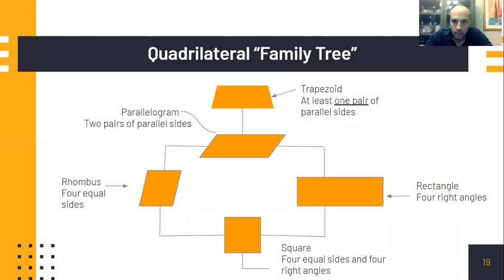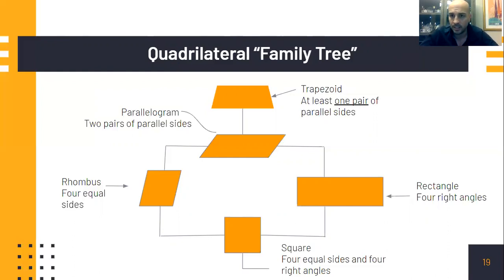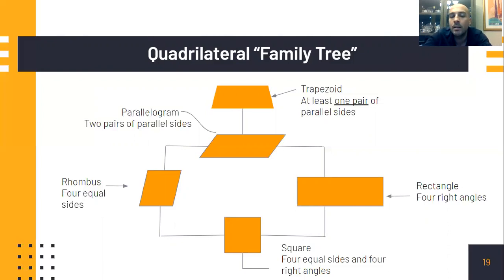Last up is something I call the quadrilateral family tree. Take a look at it and study it. You'll notice at the top of the tree is the trapezoid — the shape that has at least one pair of parallel sides — and all other shapes fall under its umbrella. Looking at the parallelogram, it goes left to a rhombus and then to a square, or right to a rectangle and then onto a square. It's important to see the connections between these shapes and their characteristics, both to distinguish one from the other and to understand why one is not the other.